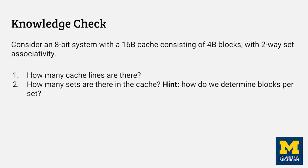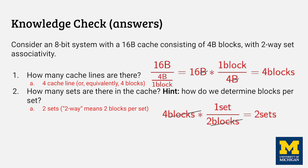Here is our first knowledge check, testing the skill of being able to quickly identify key features of a cache given its description. Pause the video and give it a try. Question one can be tricky if you don't understand that cache line is synonymous with cache block, so this question is really just asking how many blocks are in the cache. The equation shows how to get the answer of four blocks — we just take the cache size and divide it by the block size.